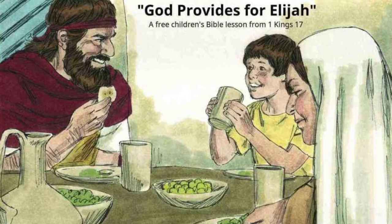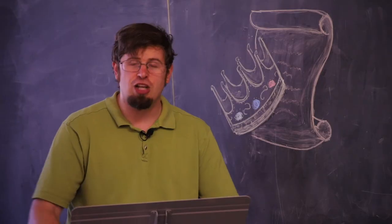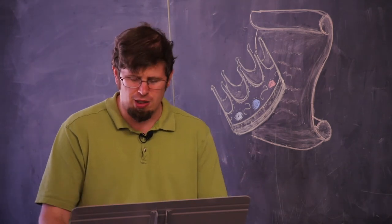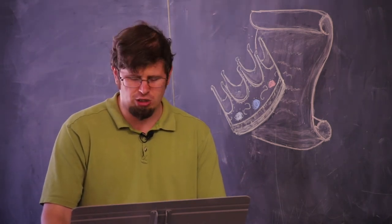Elijah has to find refuge outside of Israel with a widow of Sidon. Now this foreign woman understands Elijah's signs and believes him, but King Ahab and Queen Jezebel continue to rebel.